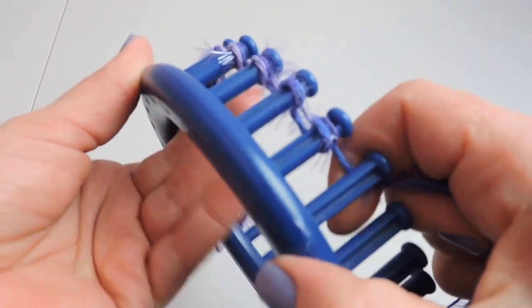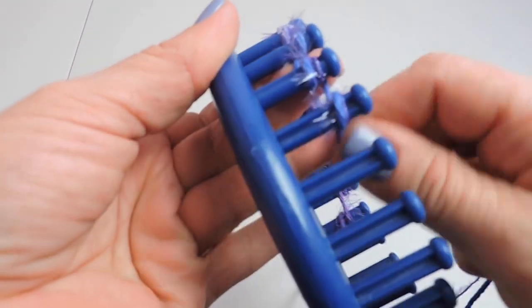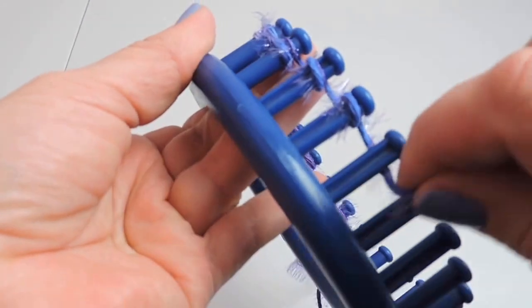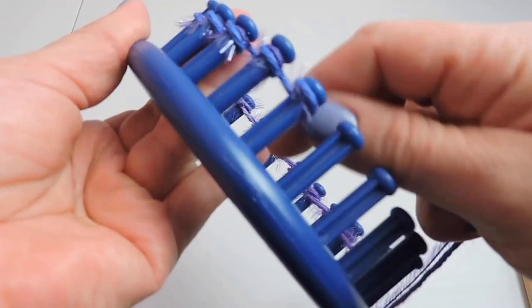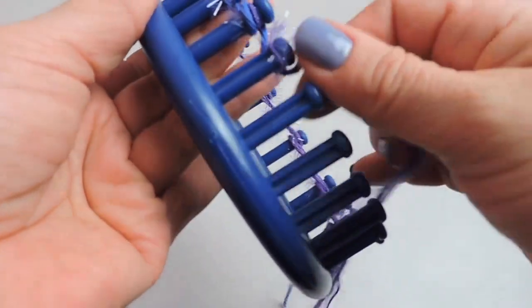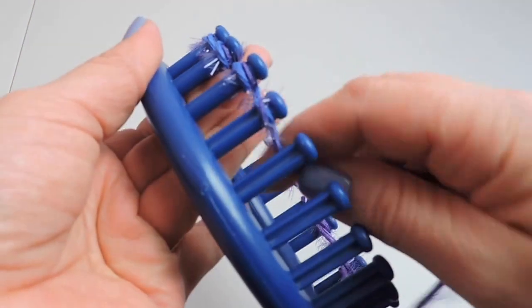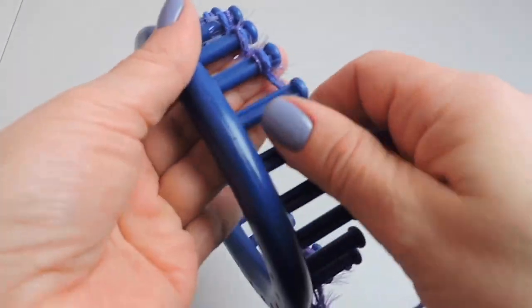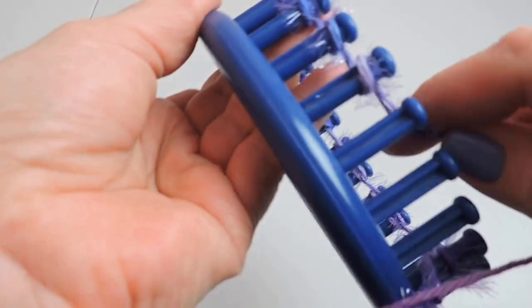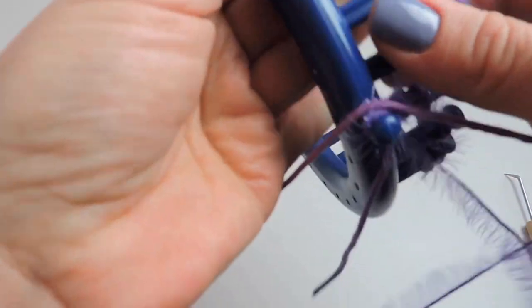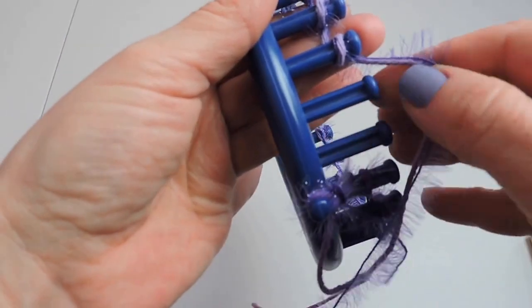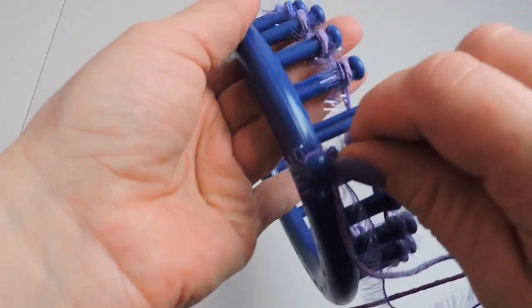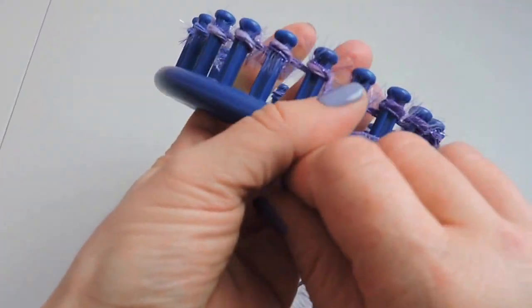We're going to do this the entire way around the loom. Again, this is called the E-wrap cast-on, very simple. Okay, we made it back to the anchor peg.